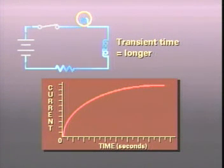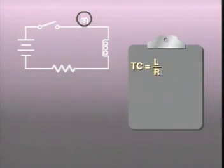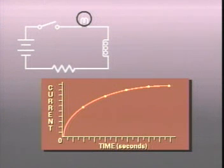This relationship can be expressed mathematically as time constant equals L divided by R, or time in seconds equals inductance in henrys divided by resistance in ohms. The time value results in a time constant.